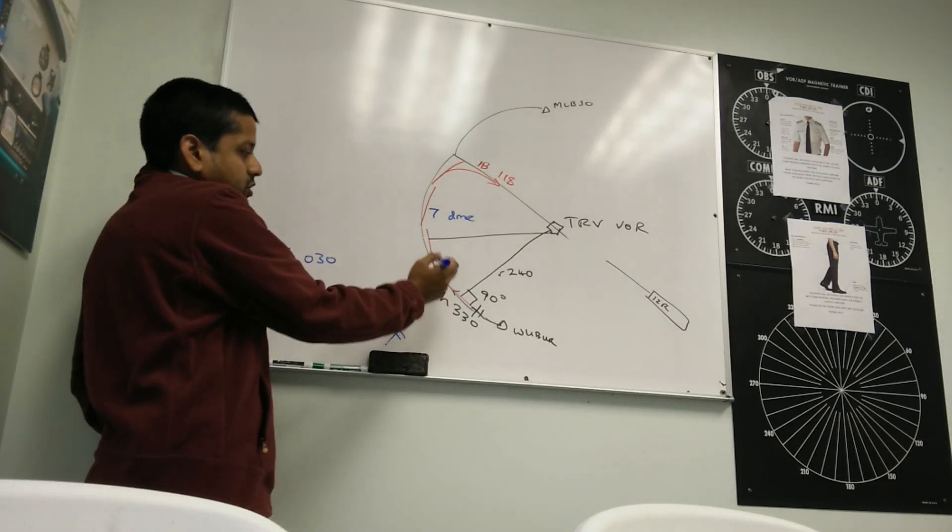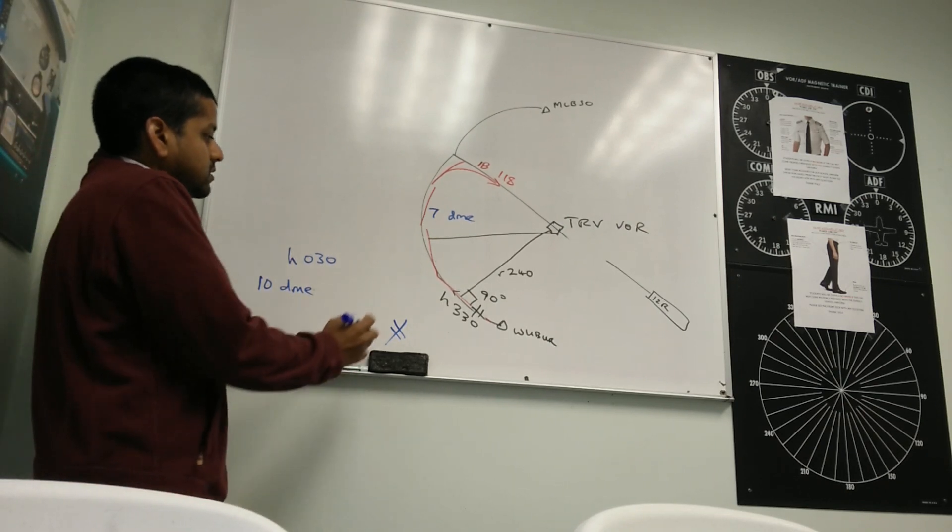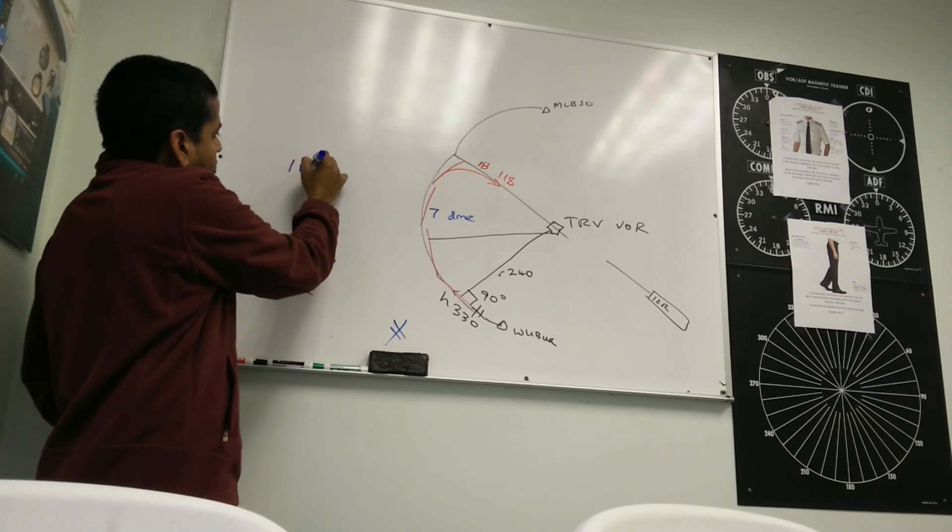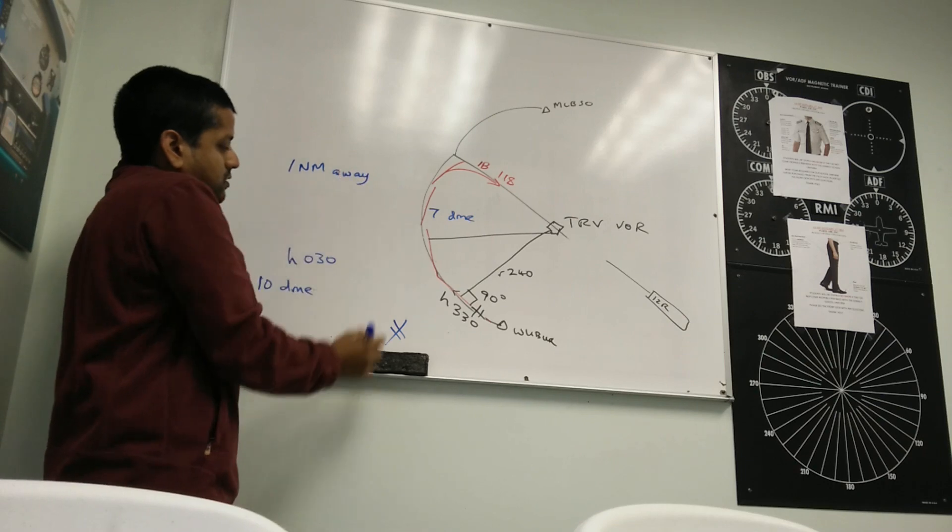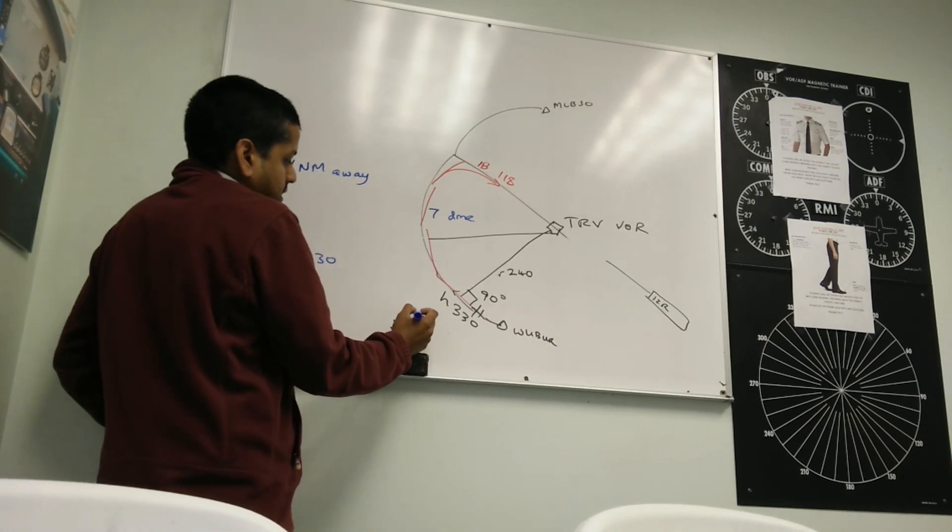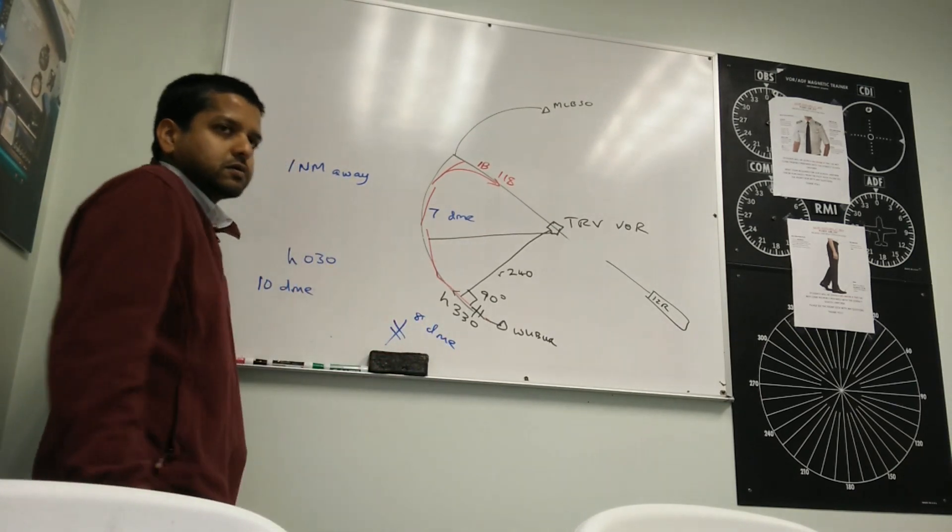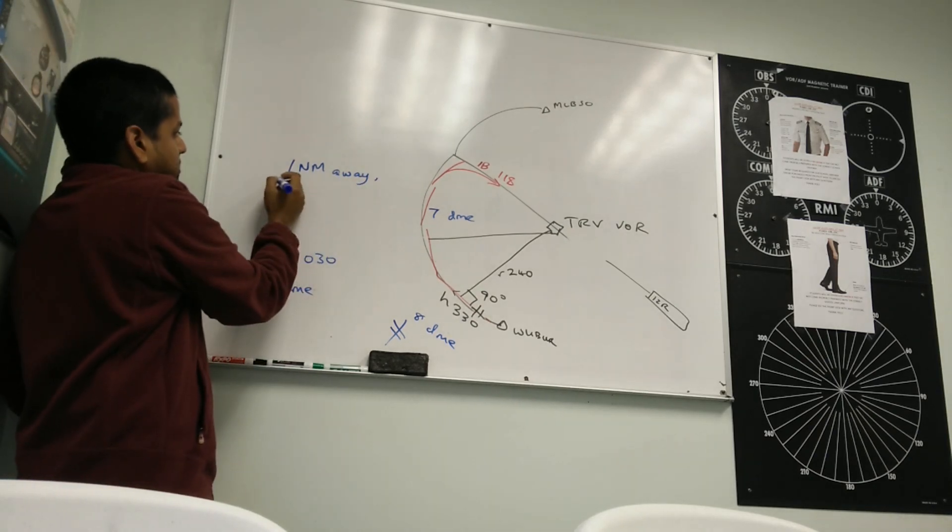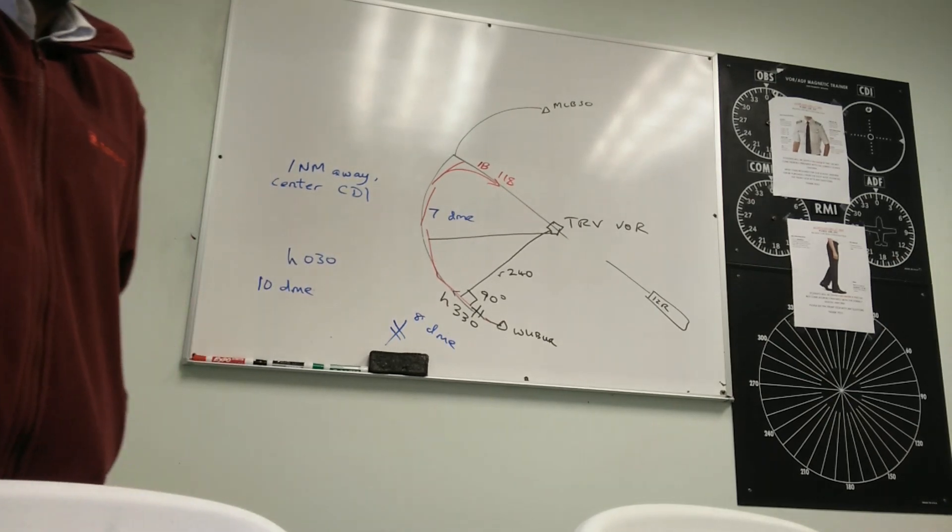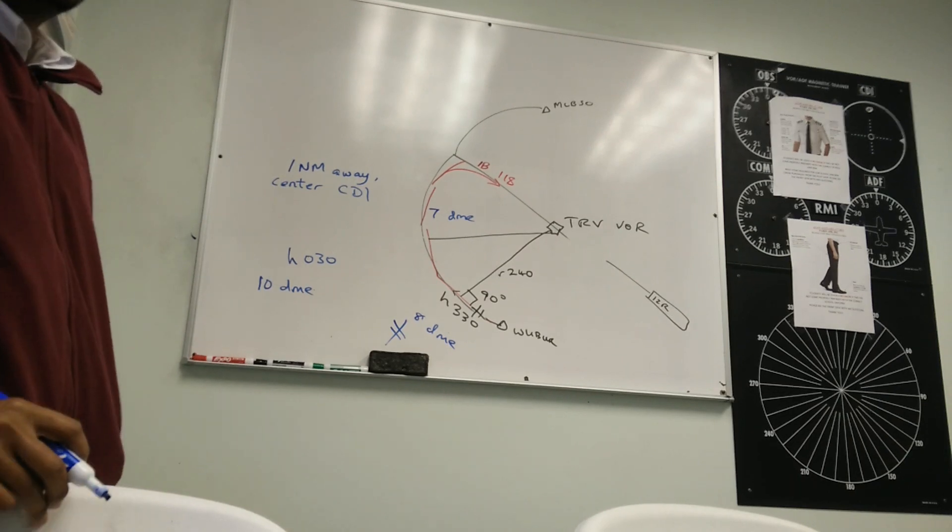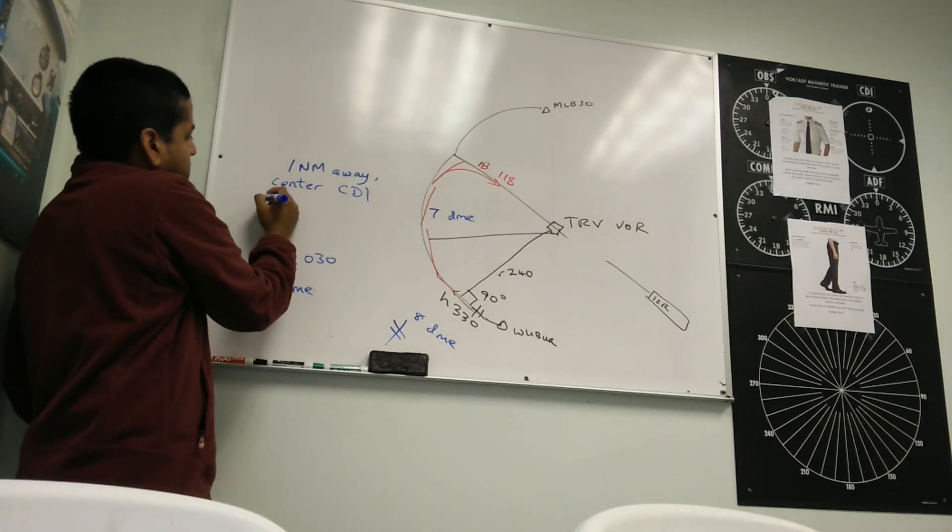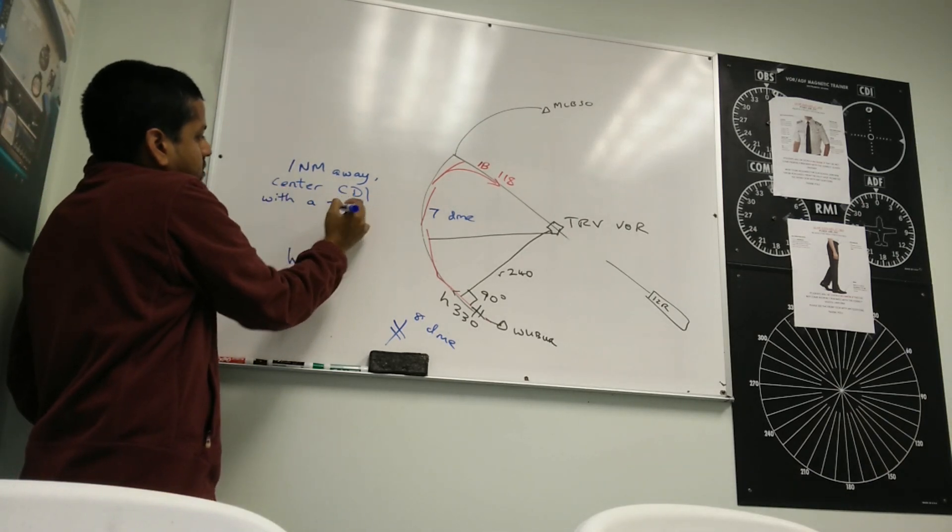When we join the arc, we are going to turn to the left. Now what I suggest is that when you are 1 nautical mile away, so you join a 7 DME arc, you are coming from outside, 1 nautical mile will be 8 DME. 1 nautical mile away, center the CDI. Why do you center the CDI? You want to center the CDI so you can look at your dots, see what heading you have to turn to. Always center the CDI with a 2 indication.